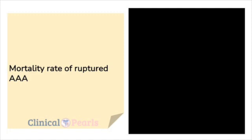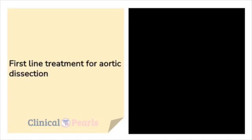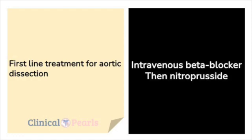Mortality rate of ruptured atherosclerotic aortic aneurysm: 80%. First-line treatment for aortic dissection: intravenous beta blocker, then nitroprusside.